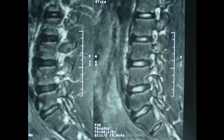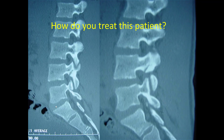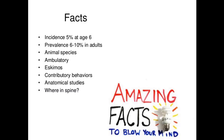Facts about pars fractures: they are very common. Five percent of all children have it by age 6 — that's a lot. If you have a class of 20 normal children, one of those children has a pars fracture. In adults it's about 6 to 10%, which I think peaks around age 13 to 14. Humans are the only ones that get pars fractures — no other animal gets a pars fracture.